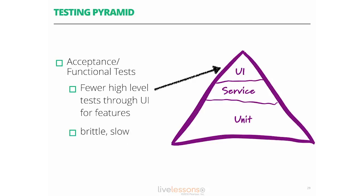Going through what each of these actually means, starting at the UI level — the very top. This is what we would call our acceptance or functional tests. What we really want from a testing pyramid is to have a lot fewer of these tests, and that's why it's called a pyramid. At the top, we want fewer end-to-end and UI tests running through the features, because they are very costly and run really slow.